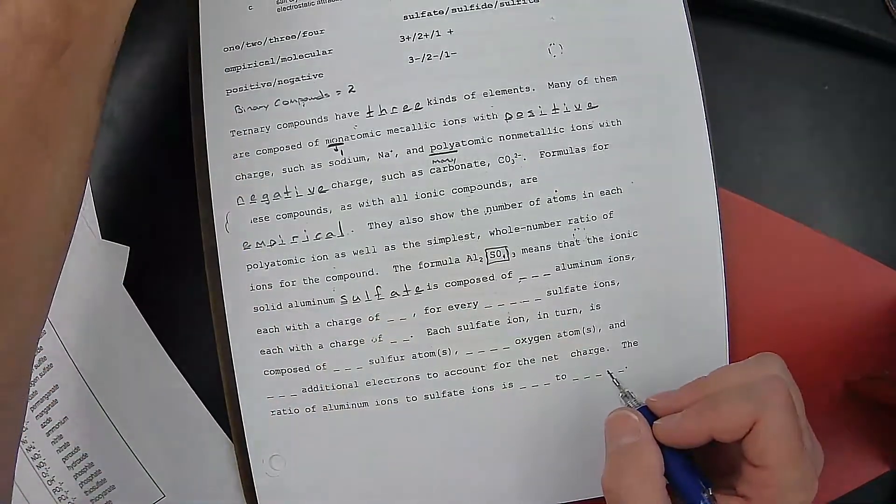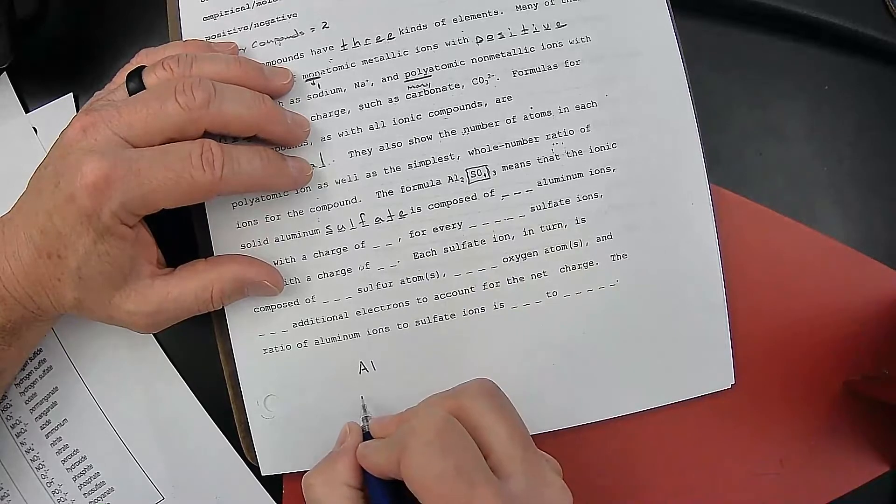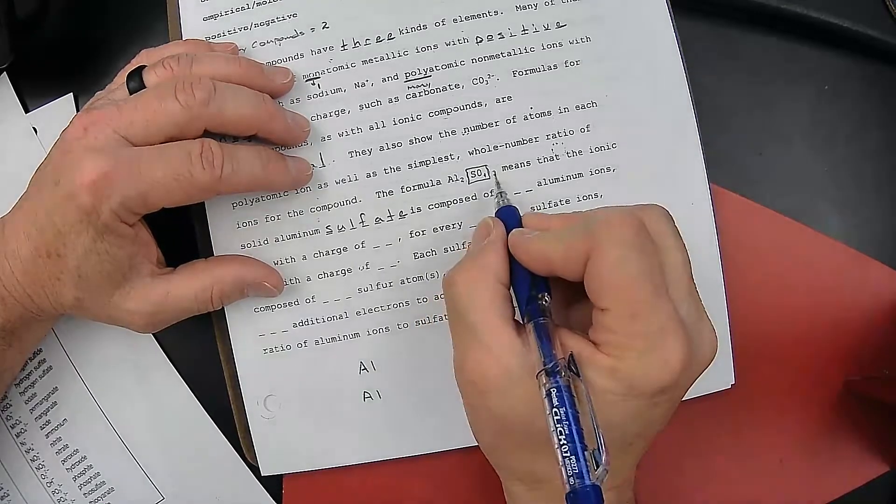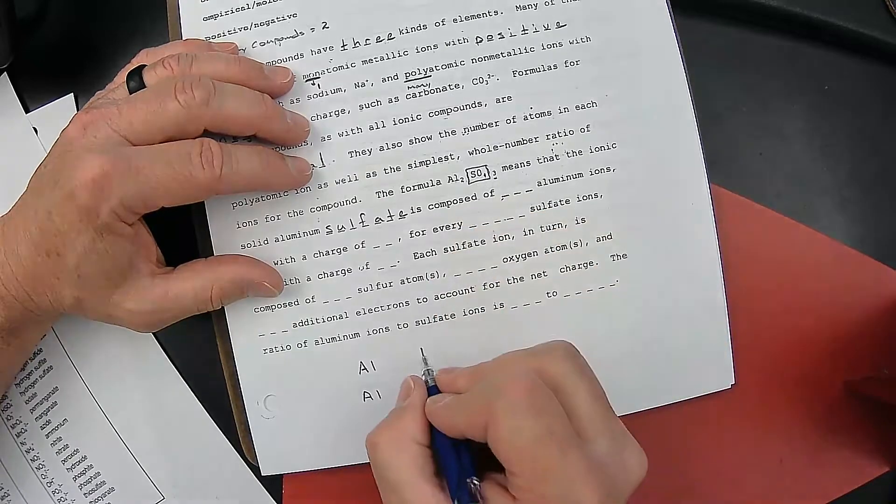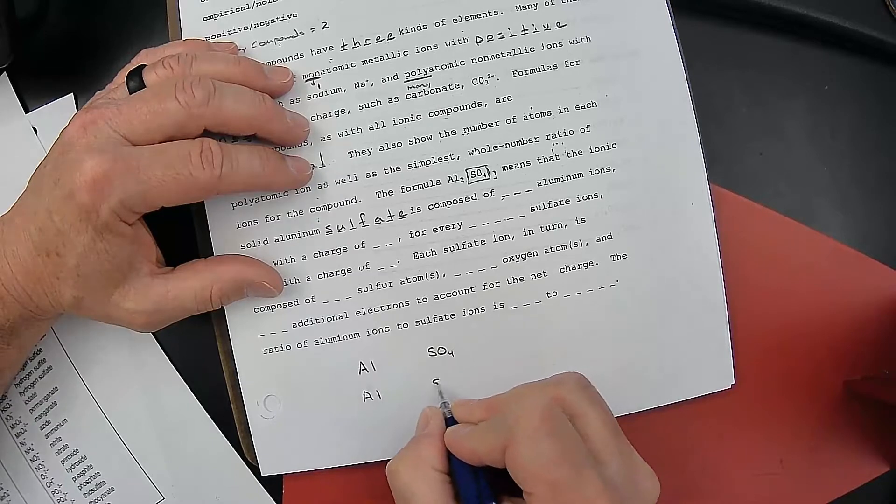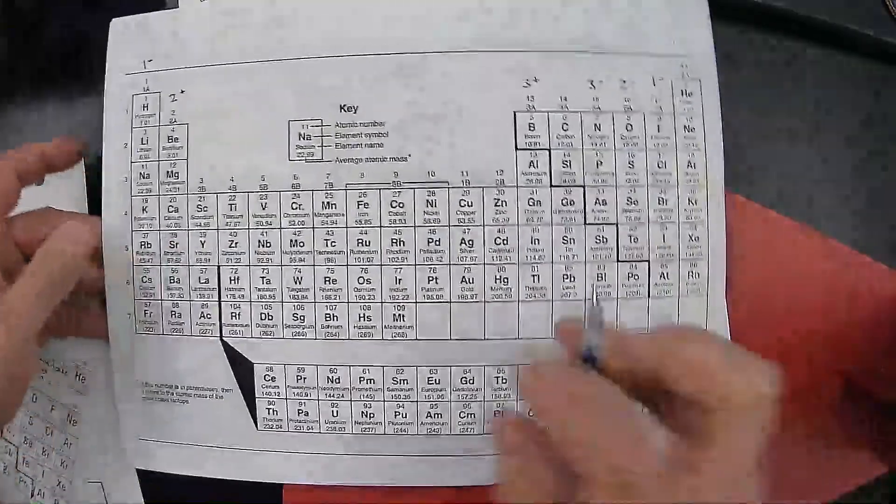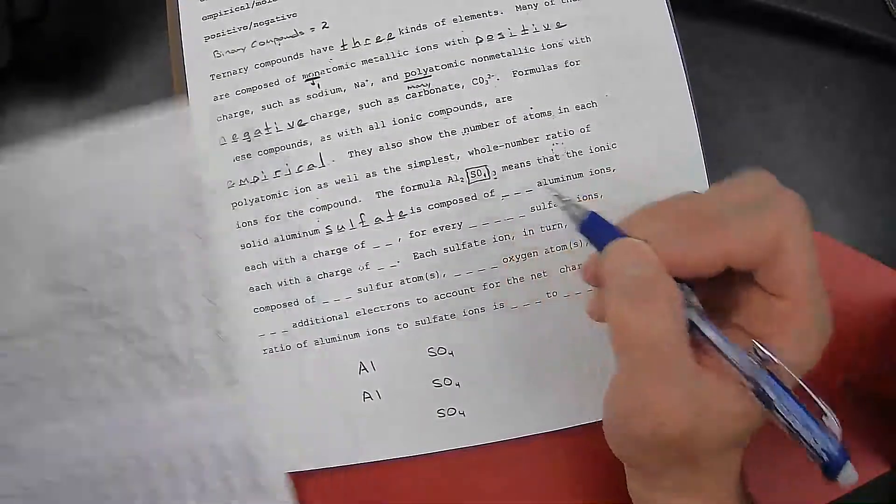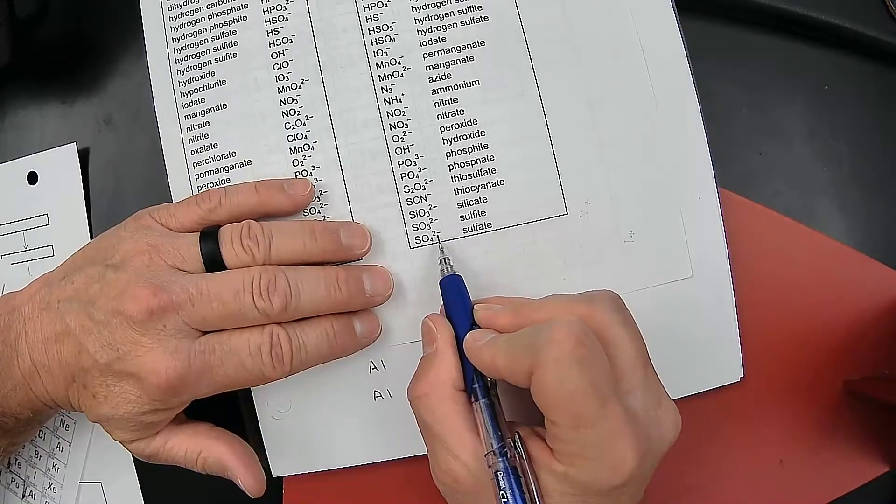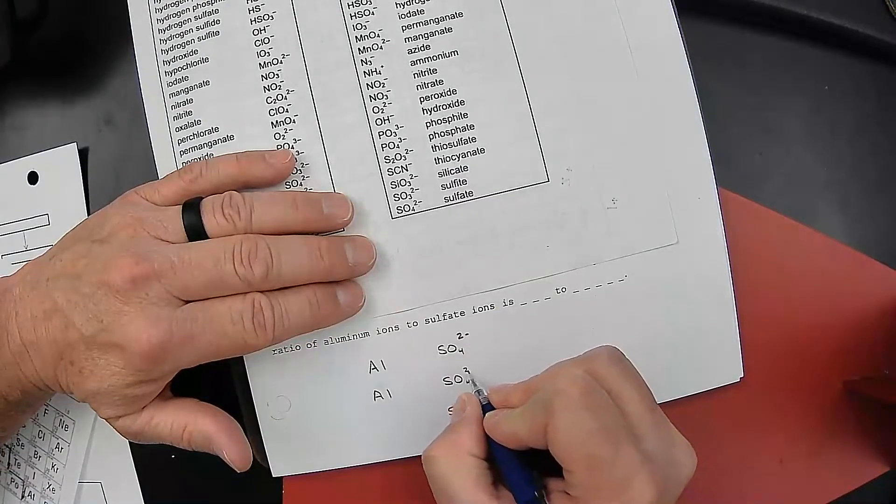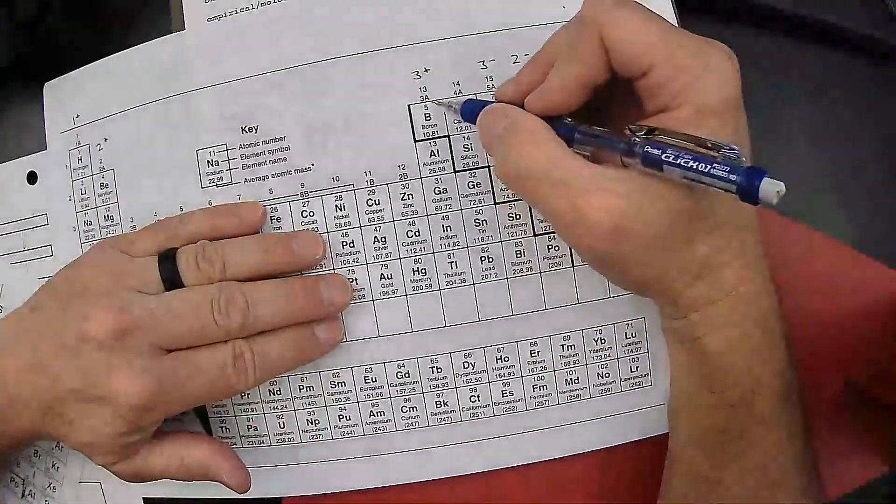So I want to dissect this formula down on the bottom of the page. Two Al's, so we know that there's an Al and another Al. And then the three on the outside of the parentheses indicates to us there are three groups of SO4. An SO4, an SO4, and an SO4. We cannot go to the periodic table to find out what kind of charge SO4 has. The only way we can find the charge of SO4 is by looking at the polyatomic ion chart, and it's a 2 minus. So that's a 2 minus, that's a 2 minus, that's a 2 minus. When we look up Al on our periodic table, it's in column 3A.